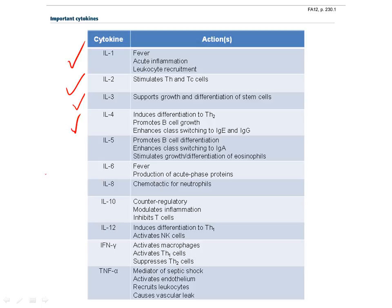IL-4 induces Th2 differentiation and enhances class switching to IgE and IgG in B cells. IL-5 also promotes differentiation of B cells and enhances class switching to IgA, and stimulates eosinophils. IL-6 is another endogenous pyrogen that causes fever and stimulates production of acute phase proteins. Anemia of chronic disease is associated with elevations in IL-6. IL-8 is a chemotactic factor for neutrophils. IL-10 is a counter-regulatory cytokine that modulates the inflammatory response by inhibiting Th1 cells.